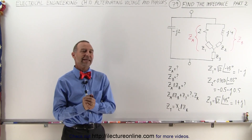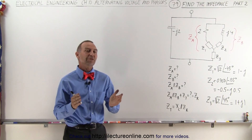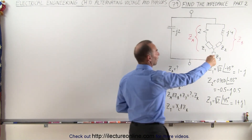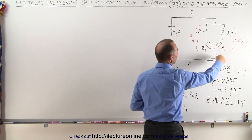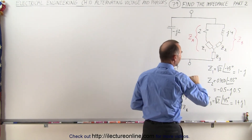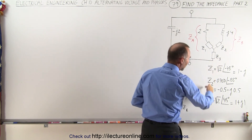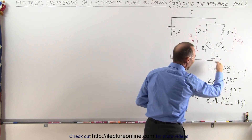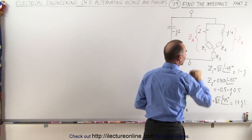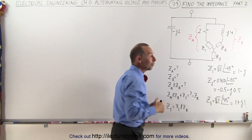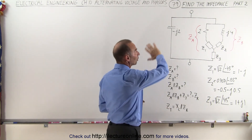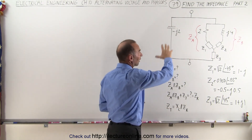Welcome to Electronline. In the previous video we saw how we took the branch circuit, took the bottom part of the branch circuit and converted from delta to a Y conversion. Here are the results of that conversion where we calculated Z1, Z2, and Z3. Now we're going to continue by trying to calculate the total impedance of the entire circuit.